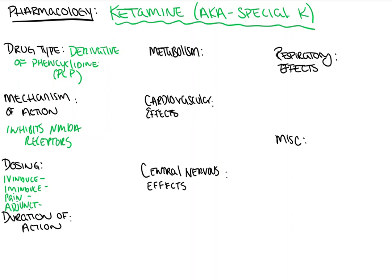The IV induction dose is about 1 to 4.5 milligrams per kilogram, whereas the IM dose is much higher at 6.5 to 13 milligrams per kilogram. We often refer to IM ketamine as a ketamine dart. It's used for pediatric patients and sometimes the mentally disabled who won't allow IV placement, but need to be sedated before entering the operating room. You inject it directly into the muscle to help them relax and often put them to sleep.